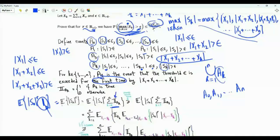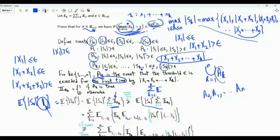By the linearity of expectation, this is equal to the summation for k from 1 to n of the expected value of indicator A_k times |S_n|^r. Let's rewrite this expectation using the law of total expectation — the tower rule.